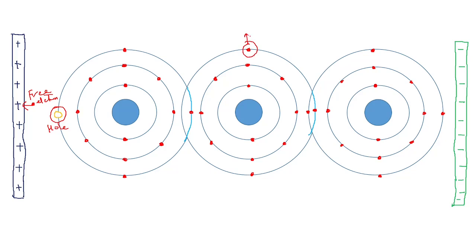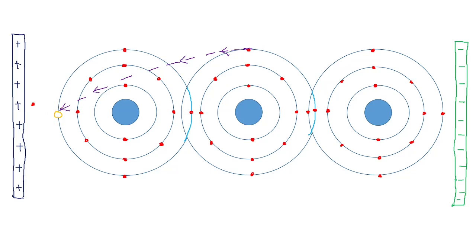For example, an electron from the second atom becomes free and moves to fill the hole left by the first atom's electron. This creates a new hole at the second atom's position. So the electron travels toward the first atom's hole, and a new hole appears where the second atom's electron was.